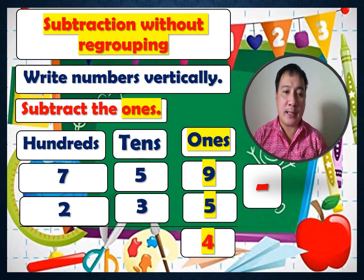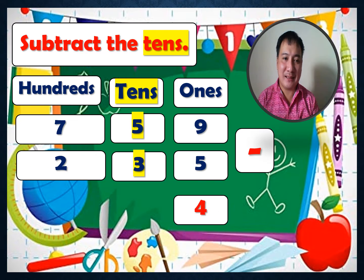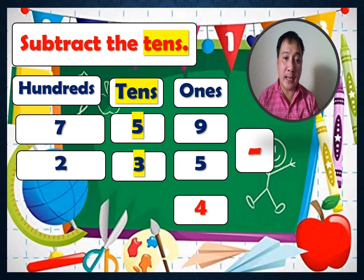First, subtract the ones: 9 minus 5 equals 4. Next, subtract the tens: 5 minus 3 equals 2.